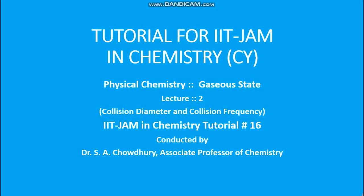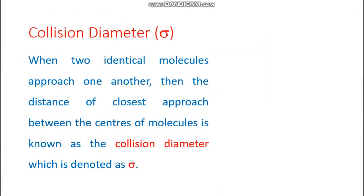Hello everyone. Welcome to tutorial number 16 of IIT JAM Chemistry — this is lecture number 2 of the physical chemistry chapter on gaseous state. The subtopic to be discussed here is collision diameter and collision frequency. Let's begin with collision diameter: when two identical molecules approach one another, the distance of closest approach between the centers of molecules is known as the collision diameter, denoted as sigma.